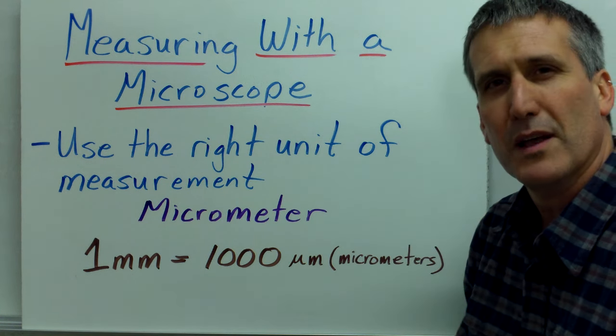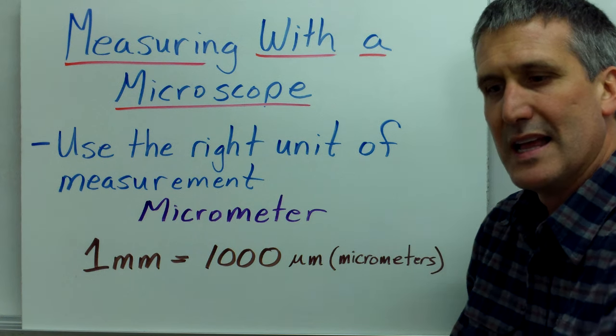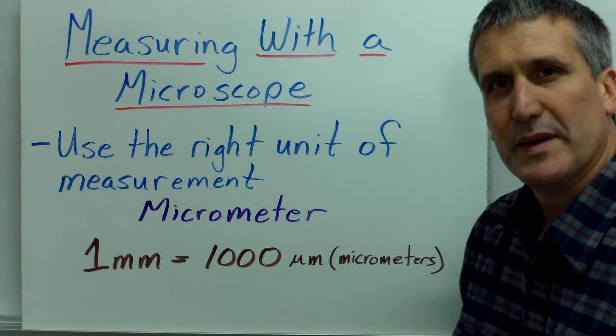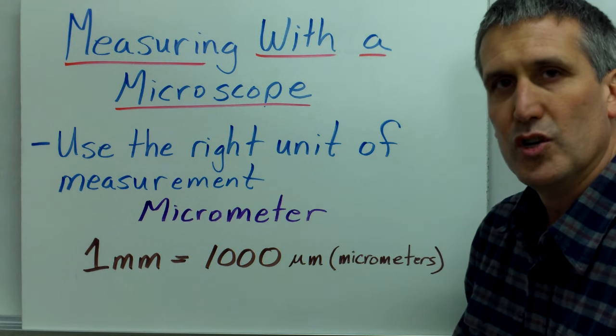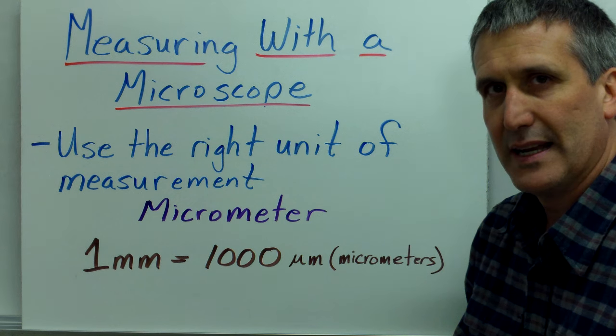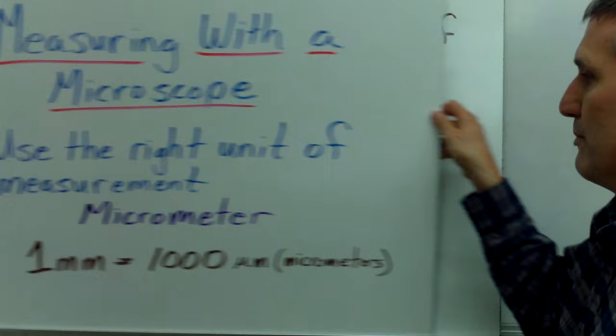So if you think of a millimeter and how small a millimeter is, and then you divide that millimeter a thousand times, each one of those little divisions would be one micrometer. And that actually turns out to be just a perfect unit of measurement for estimating and measuring the size of objects in a light microscope.